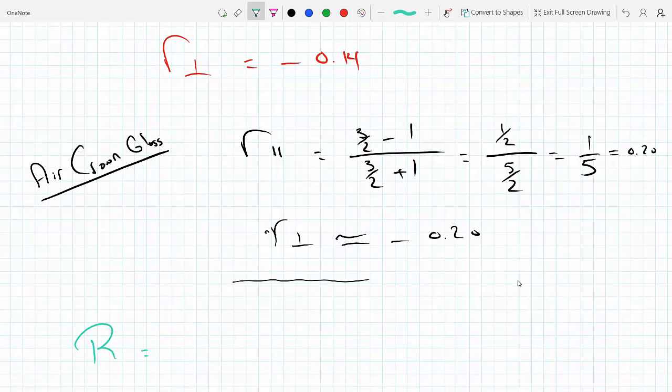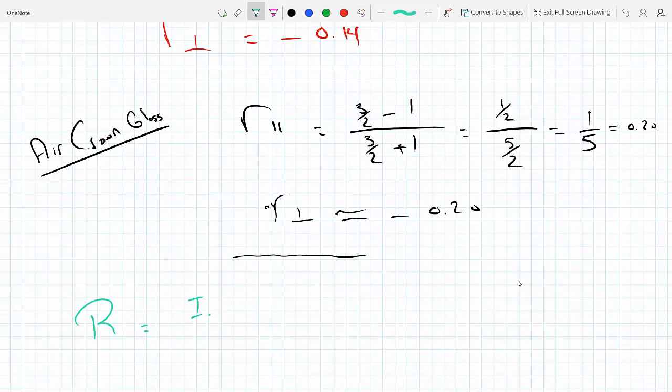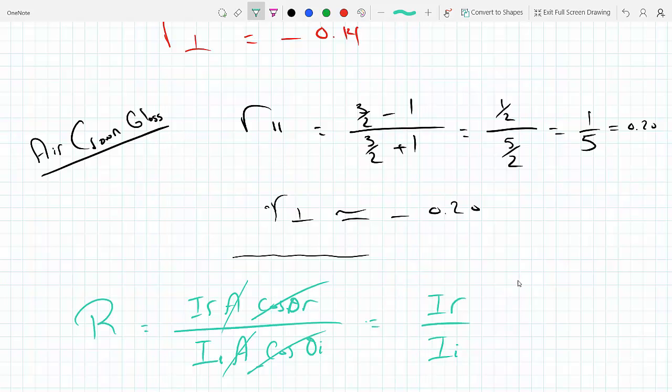We know that the ratio is - let me find the equation - I think it's just the ratio of the amplitudes of the electric fields. Yeah, it's R equals I_r times the area cosine. I_r times - the radiance is the area and those are the angles.